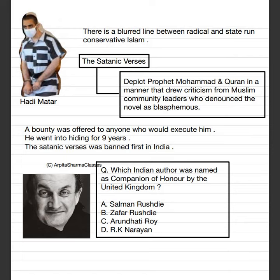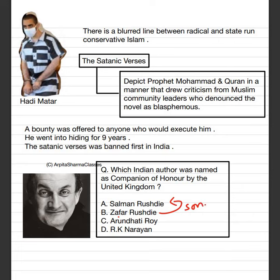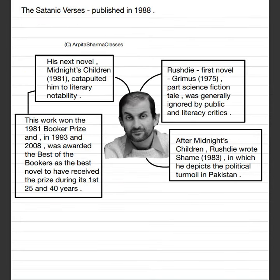The Satanic Verses — the fourth book that Salman Rushdie wrote — depicted Prophet Muhammad and the Quran in a manner that drew criticism from Muslim community leaders. That is why a bounty was offered to anyone who would kill Salman Rushdie, and he was in hiding for nine years. This novel was first banned in India. If there's a question — which Indian author was named as Companion of Honour by the United Kingdom? The answer is Salman Rushdie. Zafar Rushdie is the son of Salman Rushdie. In the PDF, important books and prizes that Salman Rushdie received are mentioned.